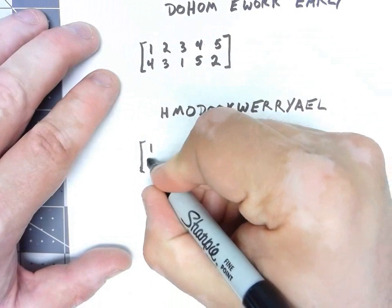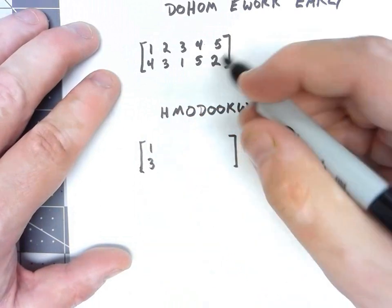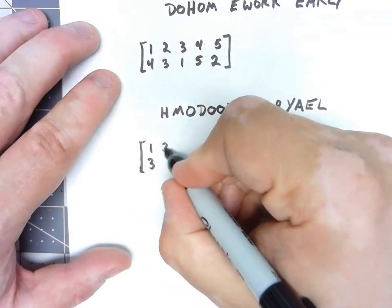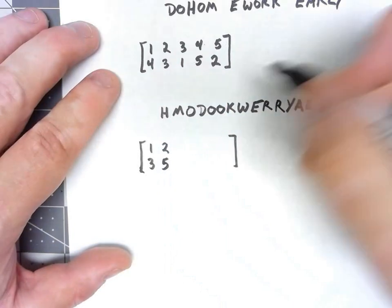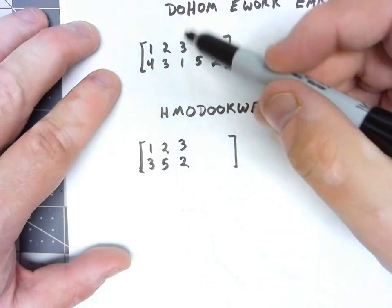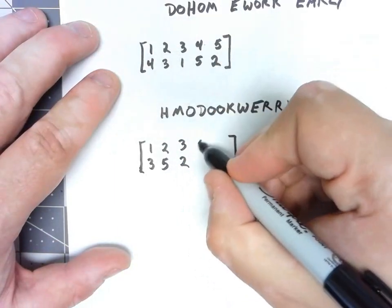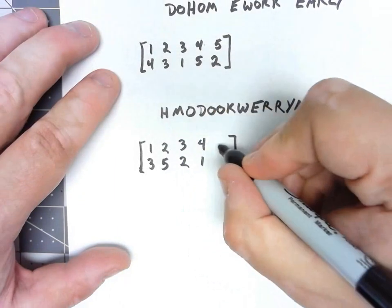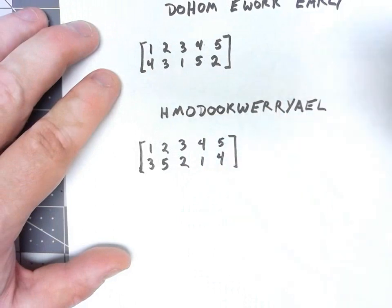Three went to one, so one has to go to three. Five went to two, so two has to go to five. Two went to three, so three has to go to two. One went to four, so four has to go to one, leaving us with five and four.